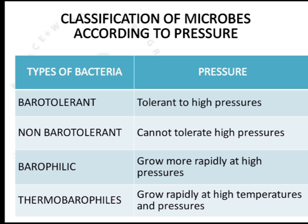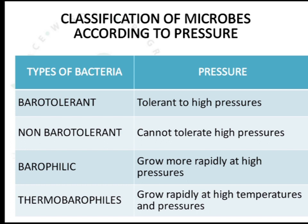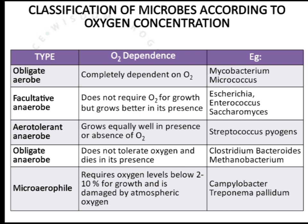The next factor is pressure. Microorganisms are classified as barotolerant (tolerant to high pressure), non-barotolerant (cannot tolerate high pressure), barophilic (grow more rapidly at high pressure), and thermobarophilic (grow rapidly at both high temperature and high pressure).